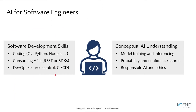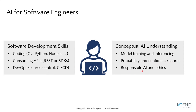Then for the implementation, we discussed about the basic understanding. You don't need to worry about the programming language — you can go with anyone. The different SDKs are there. We discussed consuming REST and SDK. We discussed something about DevOps, the basic things. When we are going to develop any model, we must have the basic understanding of machine learning, model training, probability, and confidence score. And one important thing: responsible AI.